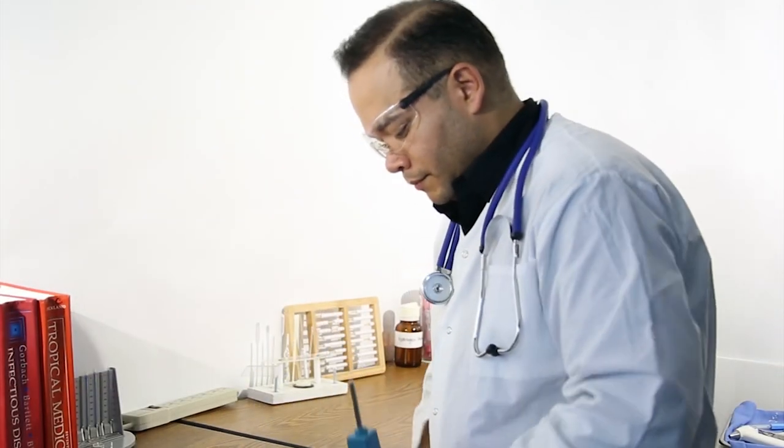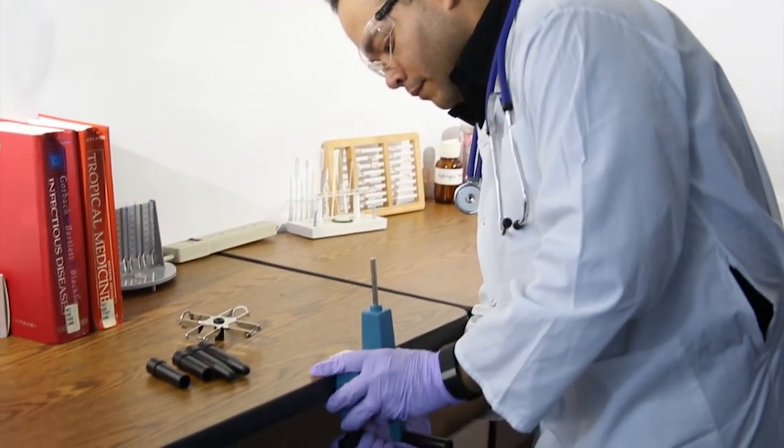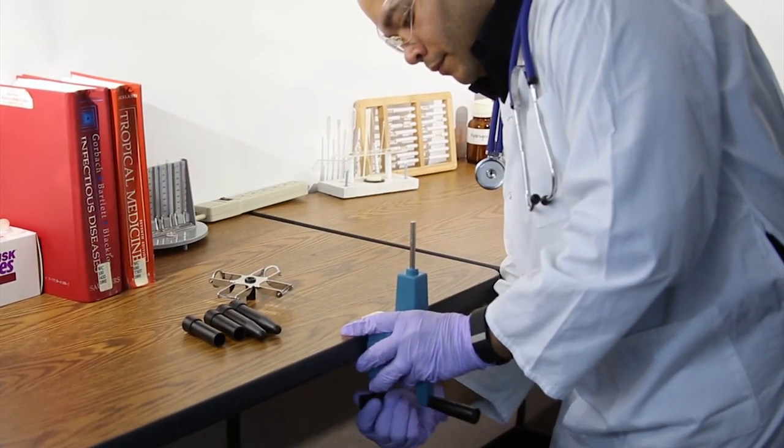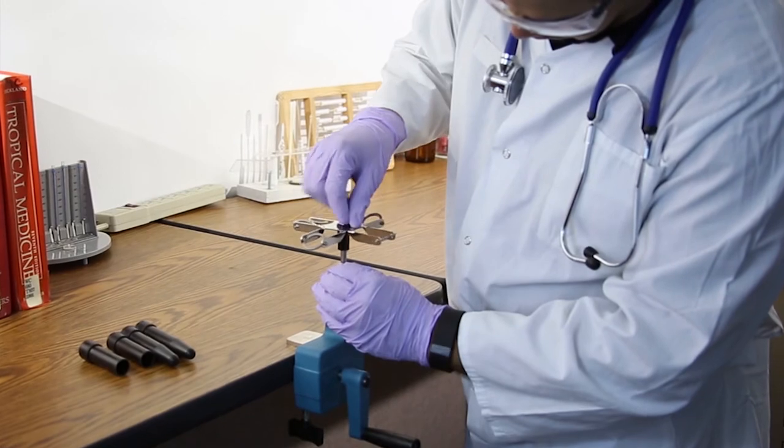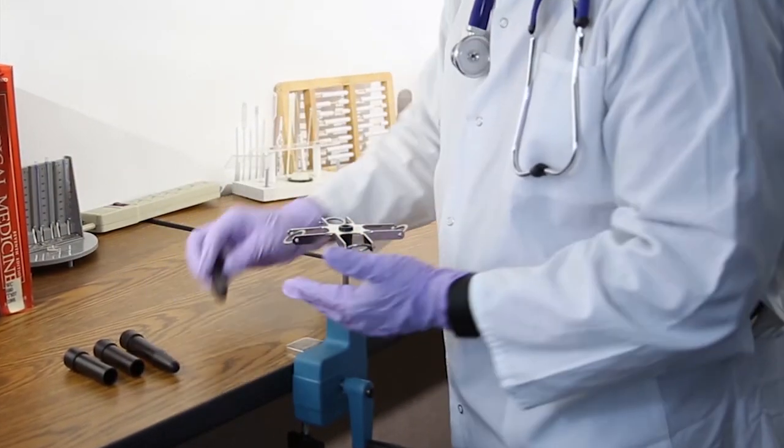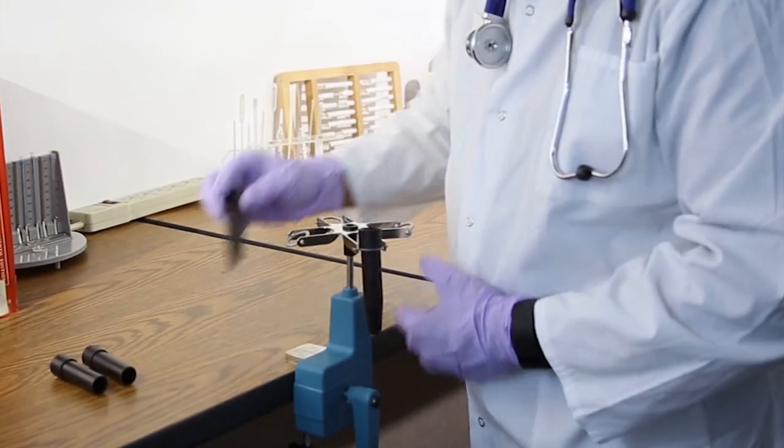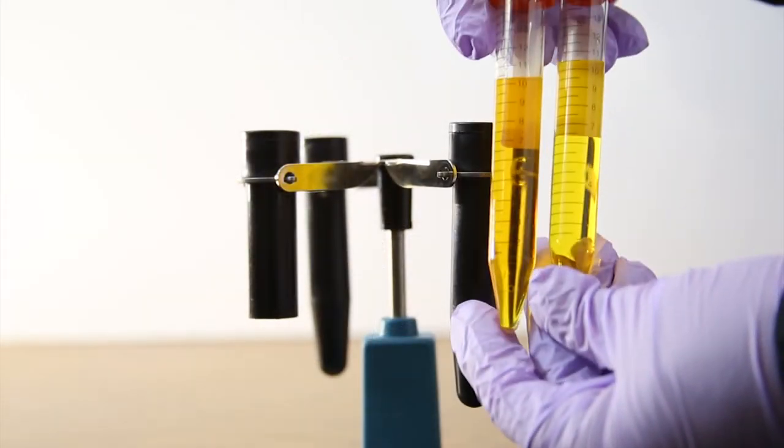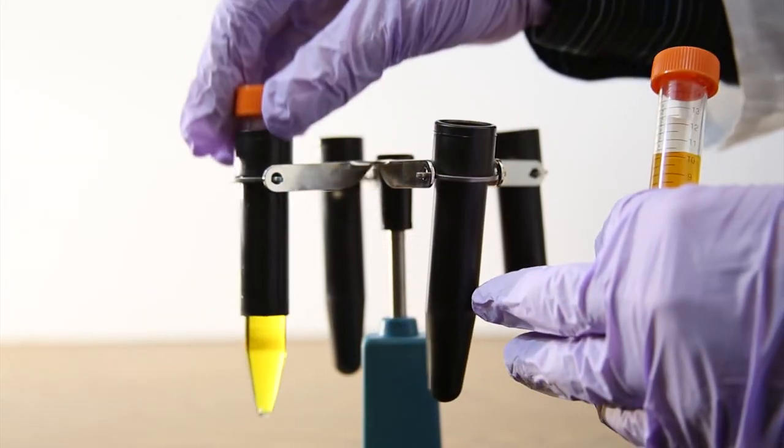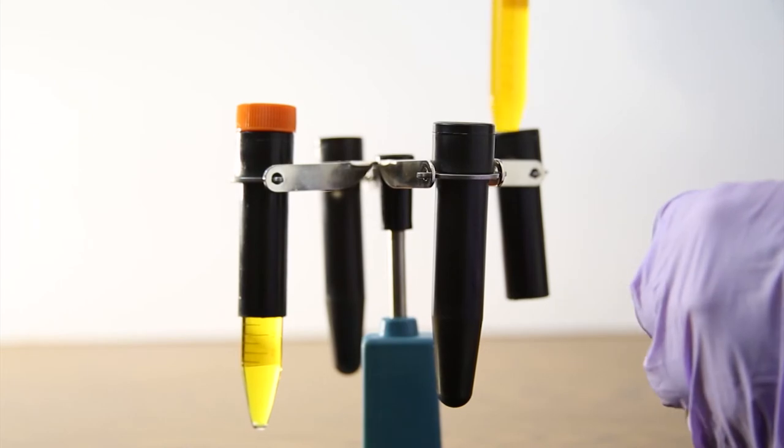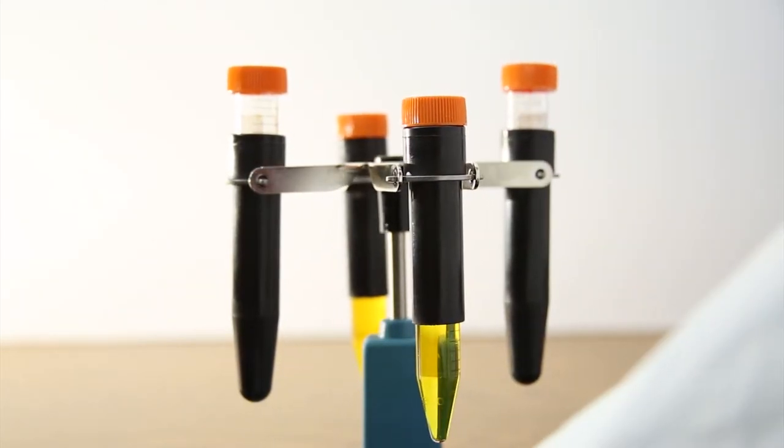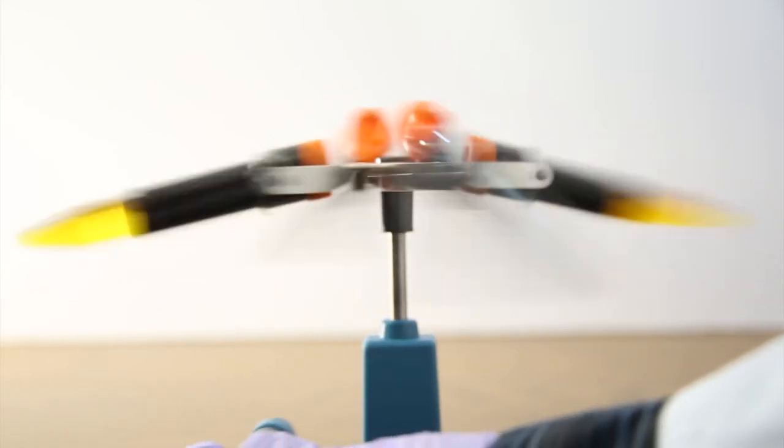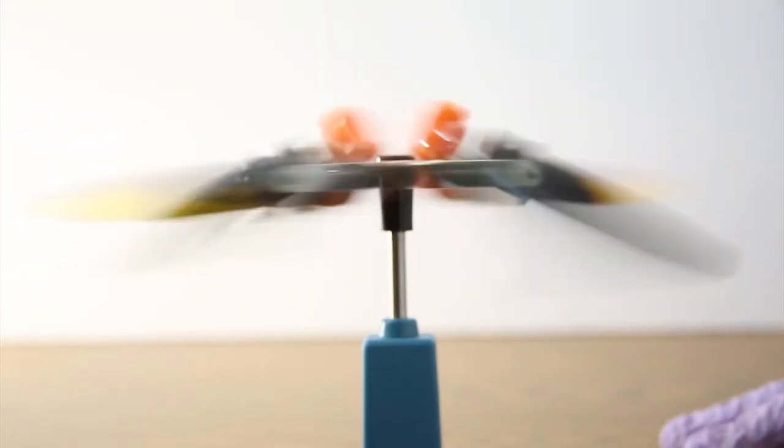To operate, secure the centrifuge to a solid support such as a table with the clamp. Slide the centrifuge head over the shaft until it clicks into place and place the black tube holders of like shape opposite each other. Be sure that each tube contains equal volumes and is balanced opposite each other in groups of 2 or 4 to prevent unwanted vibration. Crank at the specified speed and time to achieve 105 turns per minute for 5 minutes.